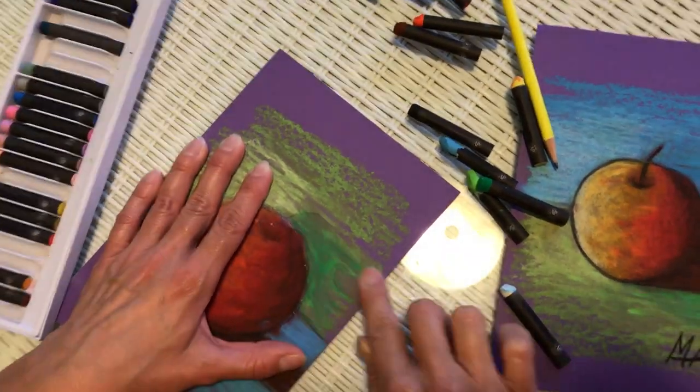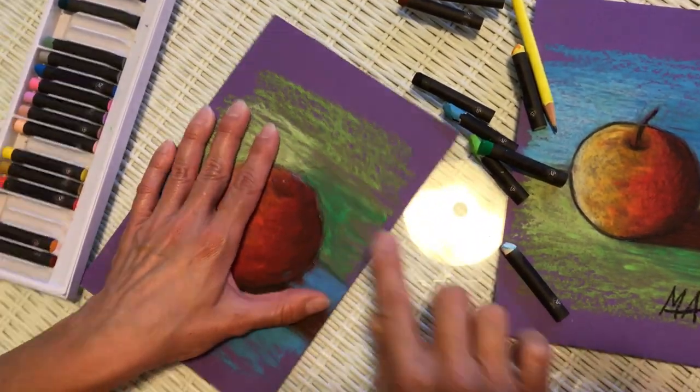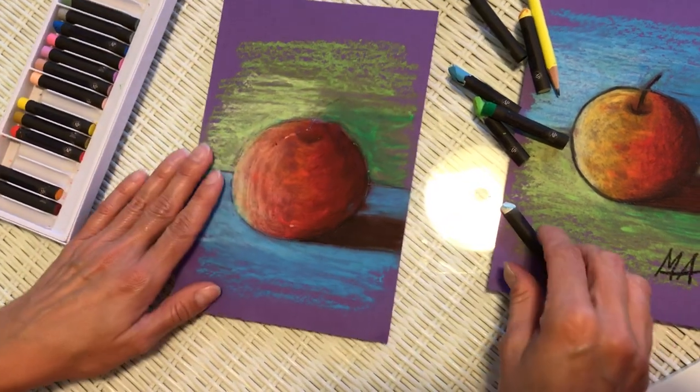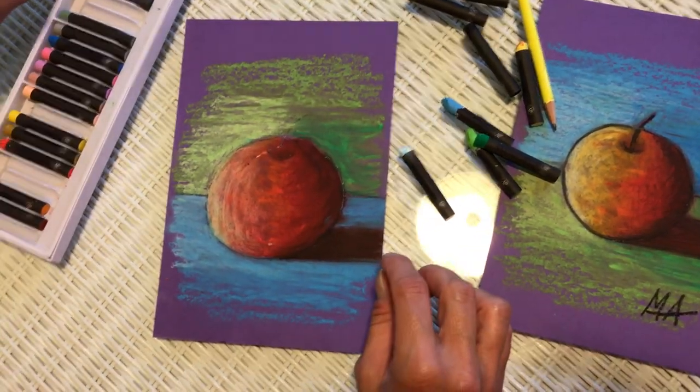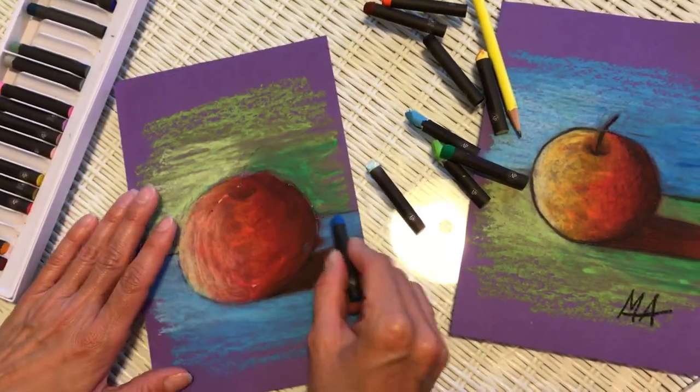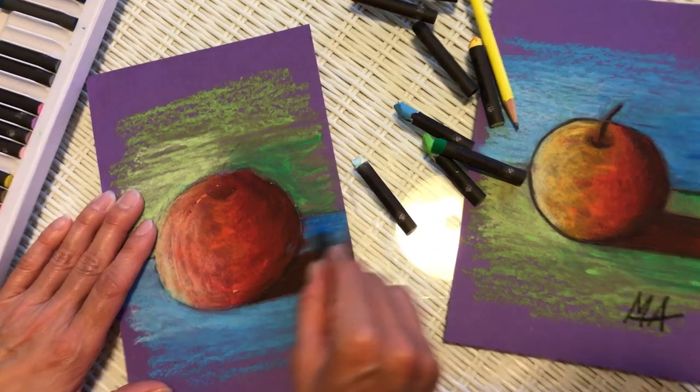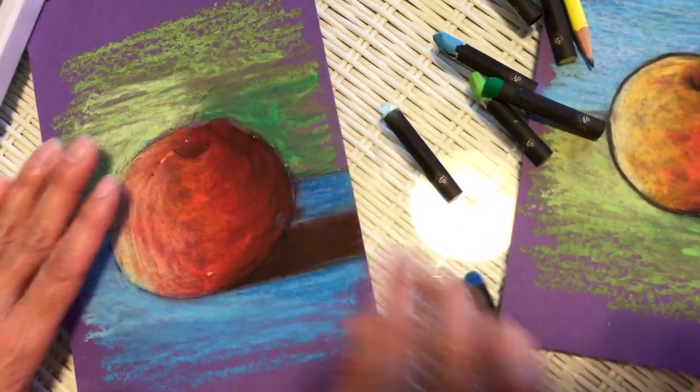The more color we blend in, the better the picture would look. But now for time's sake, we're just going to do a little bit. I'm going to add a little bit darker blue on this side near the shadow.